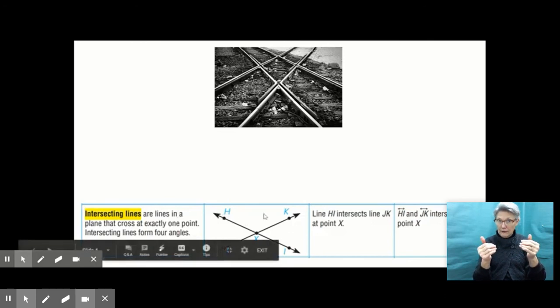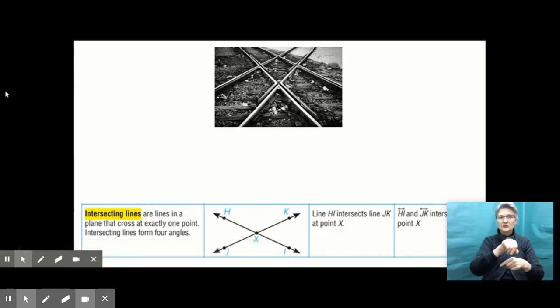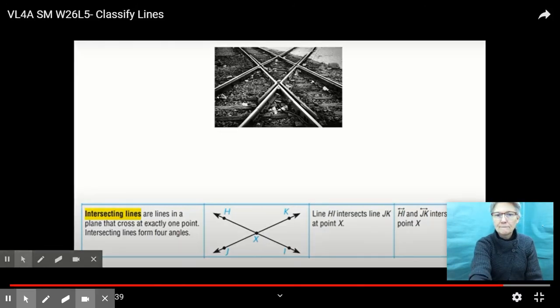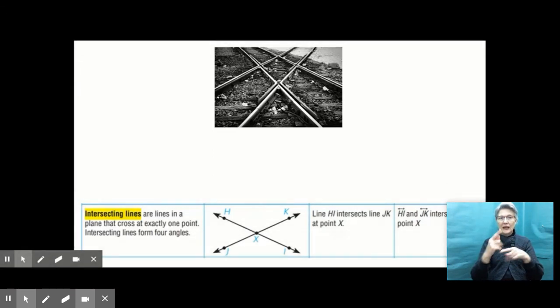Here I have a picture of lines HI and lines JK. And I can say line HI intersects line JK at point X, because they intersect at one point. So I labeled that point X where they intersect. And I don't have a fun little symbol for this, but I would write that line HI and line JK intersect at point X. So I labeled that point where they intersect.